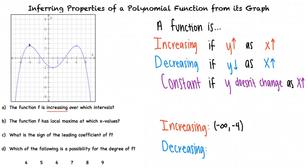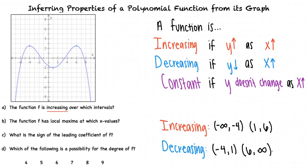From negative 4 to 1, the graph looks like it's falling, which means it's decreasing. From 1 to 6, the graph once again appears to be rising, which tells us it's increasing again. And from 6 to infinity, the graph looks like it's falling, so it's decreasing for the rest of the way. Overall, our intervals for where the function is increasing are negative infinity to negative 4, and 1 to 6.